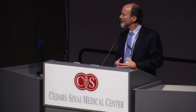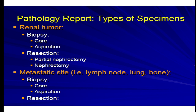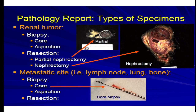There are really two main categories of specimens that we receive. One are samples from the renal tumor itself — these can either be biopsies or resections — or samples from a metastatic site, a recurrence or a metastatic site.